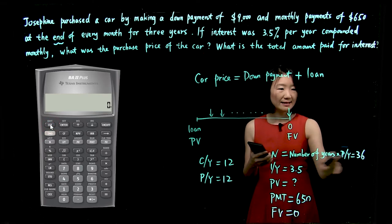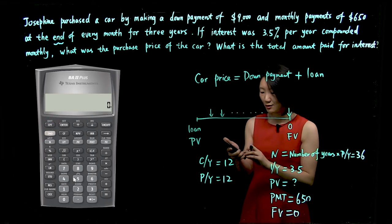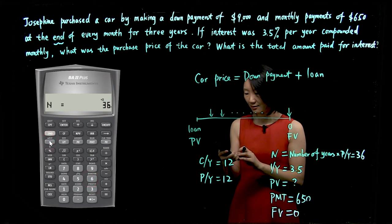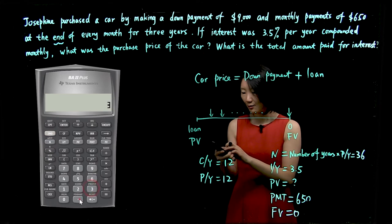Over here N is 36. So let's push 36 first and then N. IY is 3.5, 3.5 IY.